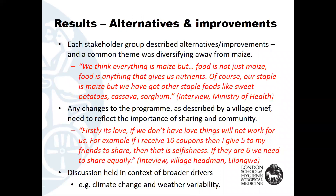Each stakeholder group described alternatives and improvements, and a common theme was the need to diversify diets away from maize. Any changes to the program, as described by a village chief, need to reflect the importance of sharing and community: 'Firstly, it's love. If we don't have love, things will not work for us. For example, if I receive 10 coupons, then I give five to my friends to share, then that is selfishness. If they are six, we need to share equally.'